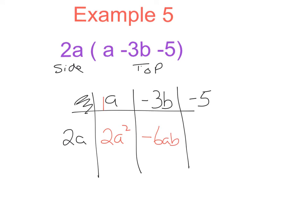Finally I have 2a times minus 5, so it's a plus by a minus which gives me a minus. The numbers next: 2 by 5 which is 10, and I have an a attached. So my full answer to this question is 2a squared minus 6ab minus 10a.